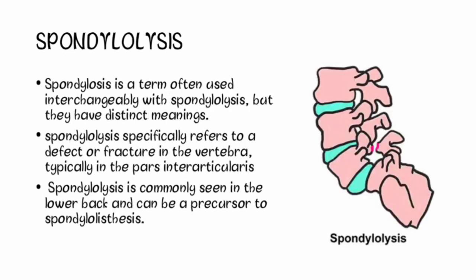Our next term is spondylolysis. Spondylolysis is a term often used interchangeably with spondylosis, but they have distinct meanings. While spondylosis refers to degenerative changes in the spine, spondylolysis refers specifically to a defect or fracture in the vertebra, typically in the pars interarticularis — a small bridge of bone connecting the facet joints at the back of the spine.